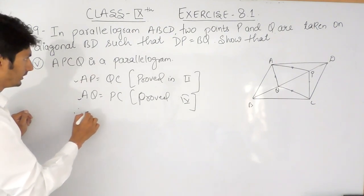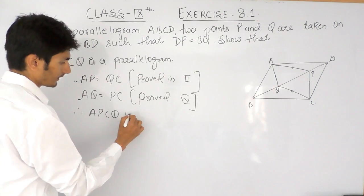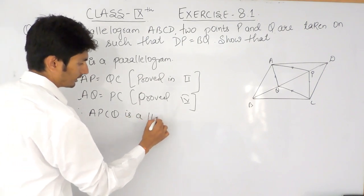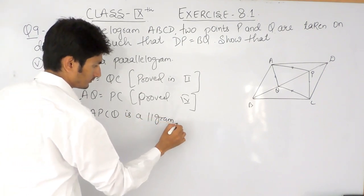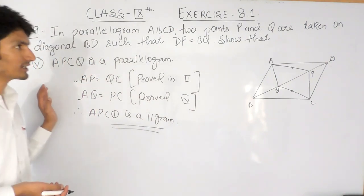Because we have proved that its opposite sides are equal, therefore APCQ must be a parallelogram. So this is how you can prove this last part.